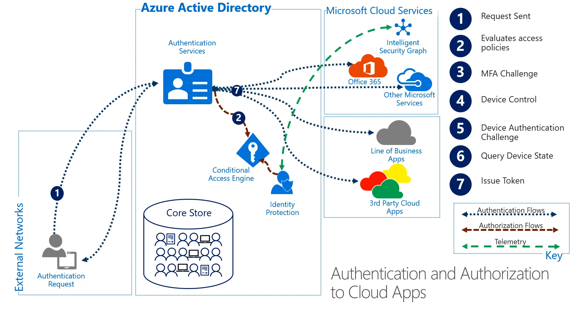Now that Ross can satisfy the conditional access policy, he can get access to the service he requested and is now able to check his email on Outlook Mobile. I get that this flow is using the device instead of multi-factor authentication. When should we use one or the other?